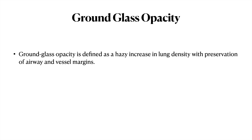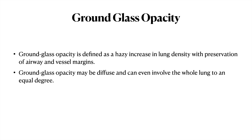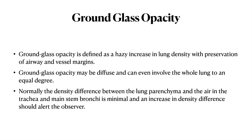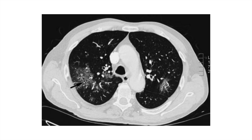Ground glass opacity is defined as a hazy increase in lung density with preservation of airway and vessel margins. The ground glass opacity may be diffuse and can involve the whole lung equally. Normally the density difference between lung parenchyma and the air in the trachea and mainstream bronchus is minimal. An increase in the density difference should alert an observer that the disease process is diffuse and involves the whole lung, though most of the time what we get is patchy ground glassing rather than diffuse.